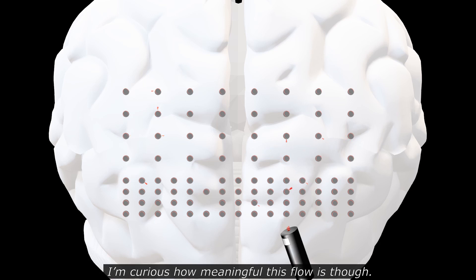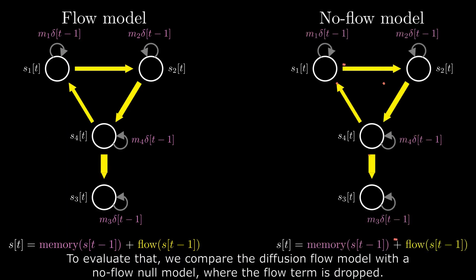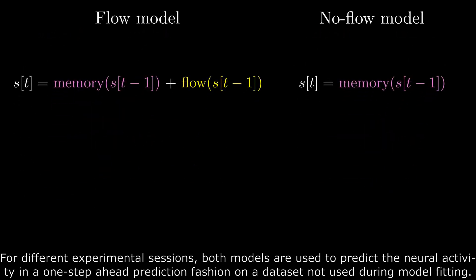I'm curious how meaningful this flow is though. To evaluate that, we compare the diffusion model with the no-flow node model where the flow term is dropped. For different experimental sessions, both models are used to predict the neural activity in a one-step-ahead prediction fashion on a dataset not used during the model fitting.